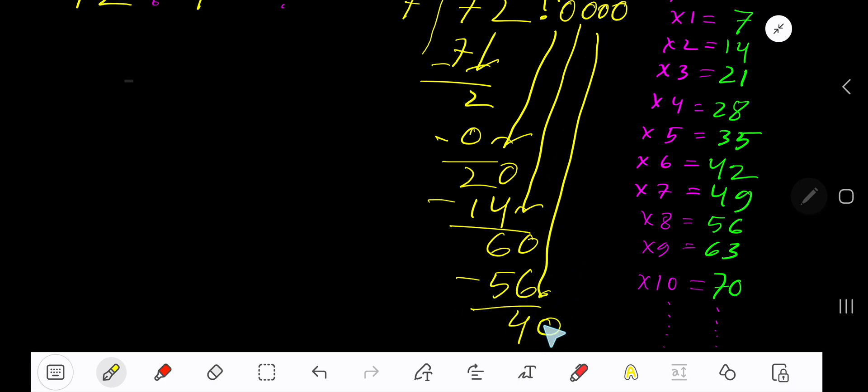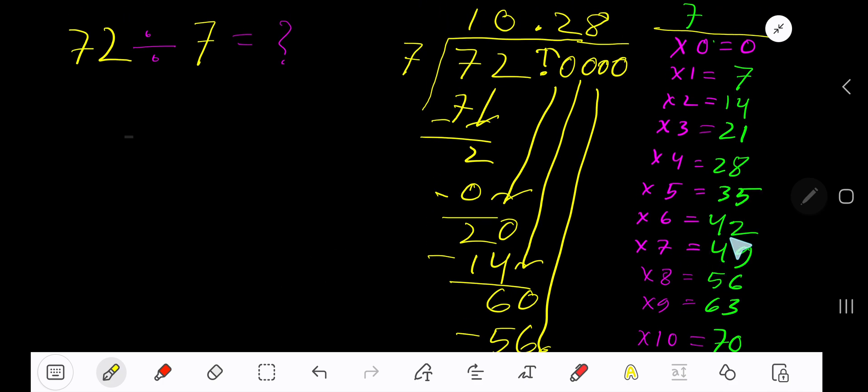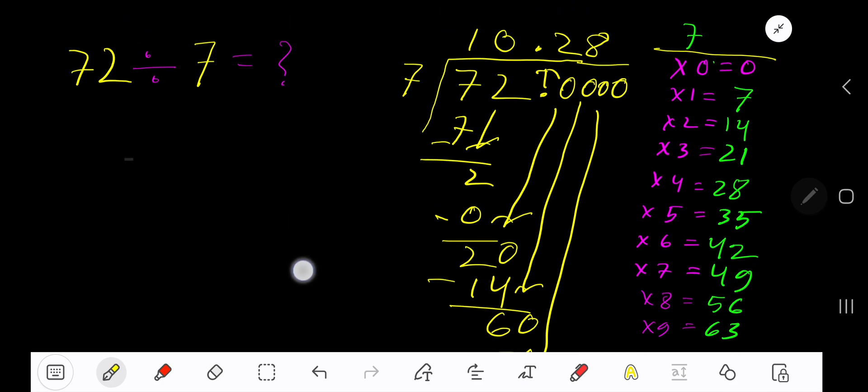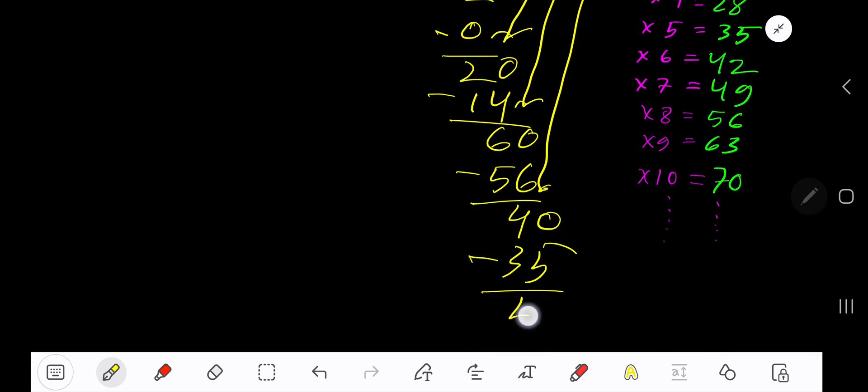Bring down another 0 to get 40. 7 goes into 40 how many times? 6 times would be 42, which is greater, so 5 times. 5 times 7 is 35. Subtract to get 5.